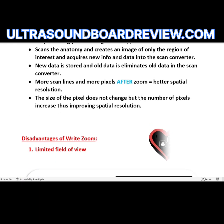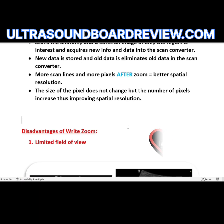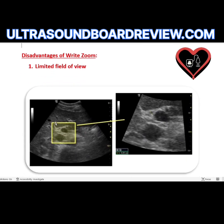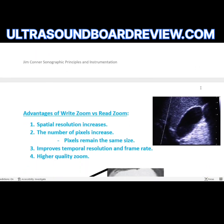The only disadvantage of write magnification is that you're going to have a limited field of view. In this example, you can see how the box is placed over the region of interest before zooming, and after zooming you're not going to see information that's outside this box. But that's okay because we're only focused in this area — you can have better spatial resolution as a result of more scan lines and more pixels, and the size of the pixel does not change.